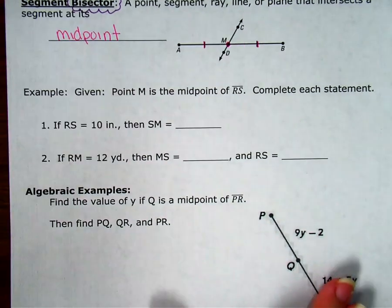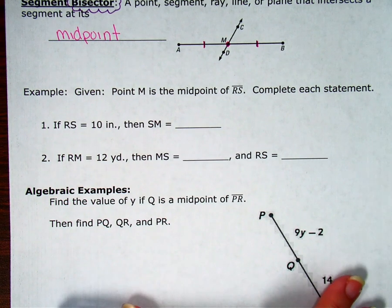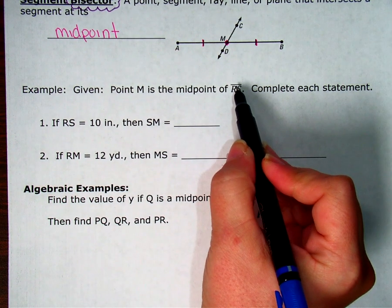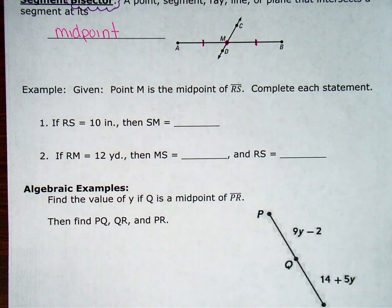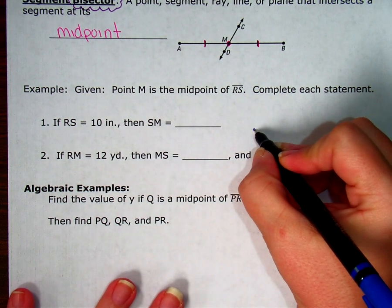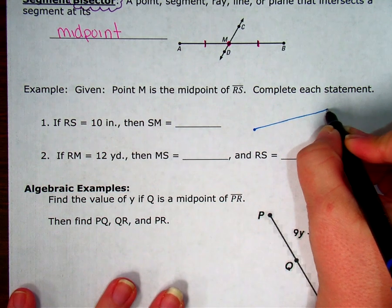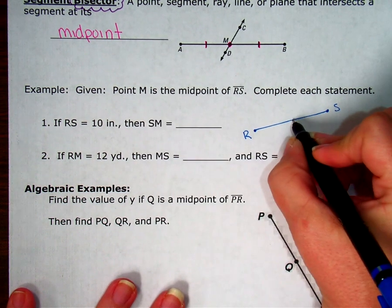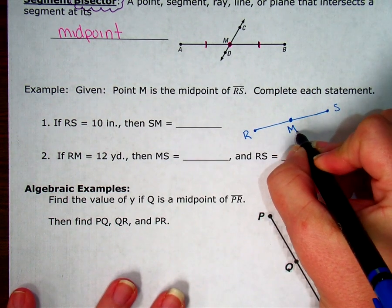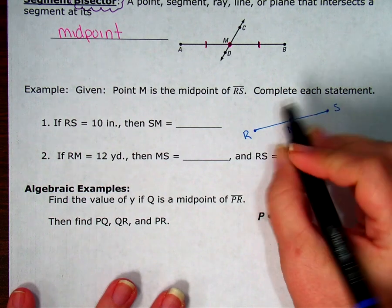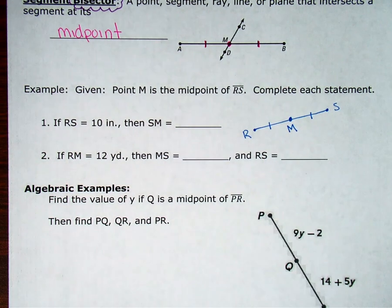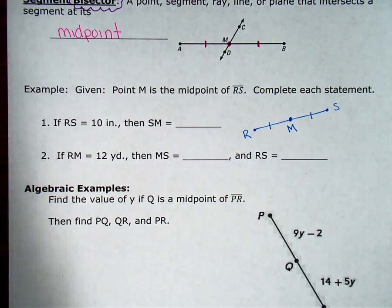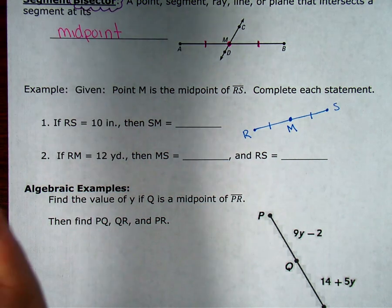Let's look at an example. It says that I'm given that point M is a midpoint of segment, because there's no arrows, RS. And then I want to complete each statement. I have statement 1 and statement 2. Since I don't have a picture, the first thing I should do is draw myself one. So I'm going to draw segment RS. And M is the midpoint. So I'm going to put M where it looks like it's in the middle, but that's not enough. I also have to add the tick marks. So I've drawn my picture.